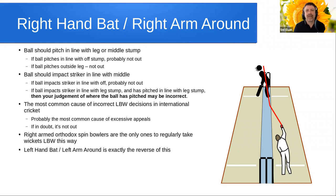Probably the only type of bowlers that can regularly take wickets LBW this way are the right-arm orthodox spin bowlers — that is the right-arm off-spin bowlers. I'm not going to then put up another slide of left-hand batter, left-arm bowler bowling around the wicket — it is exactly the reverse of this situation. So again, only the left-arm orthodox spin bowlers, that is the left-arm leg spinners, are going to regularly take wickets in that configuration.